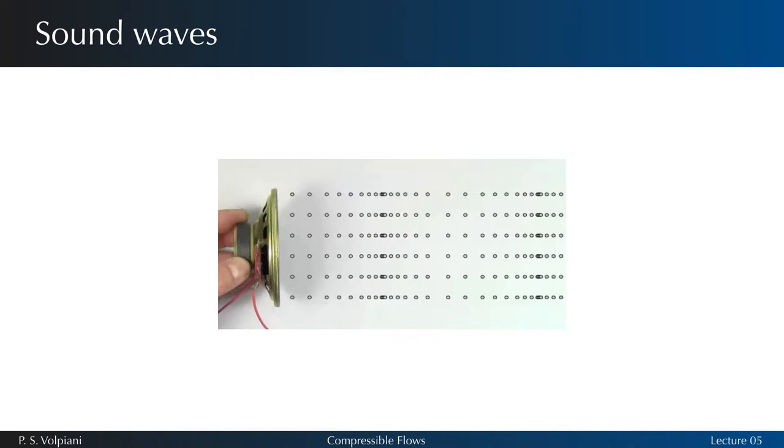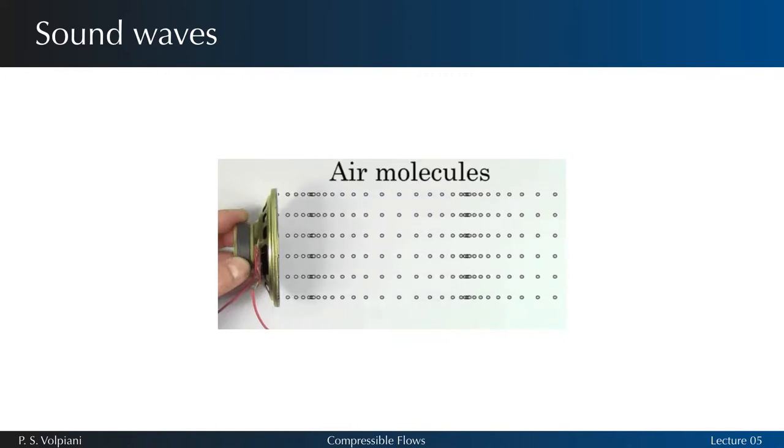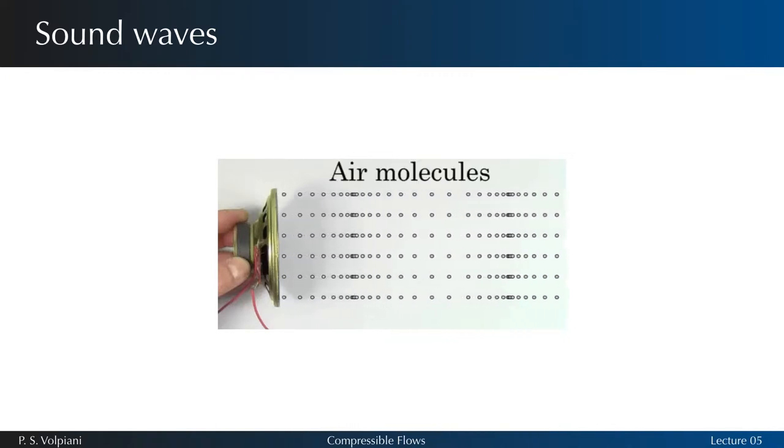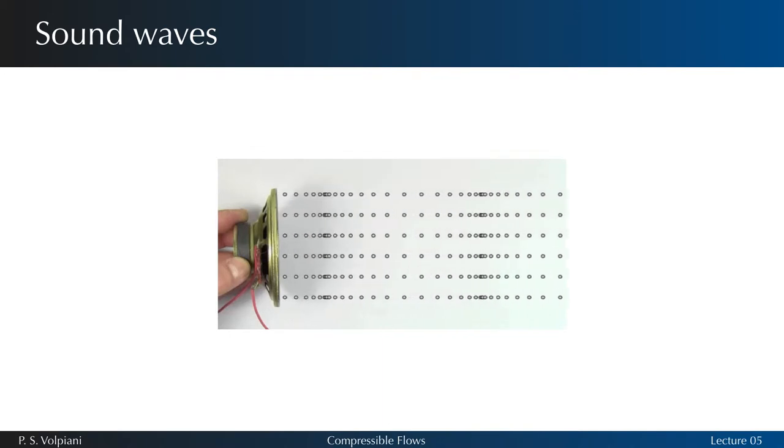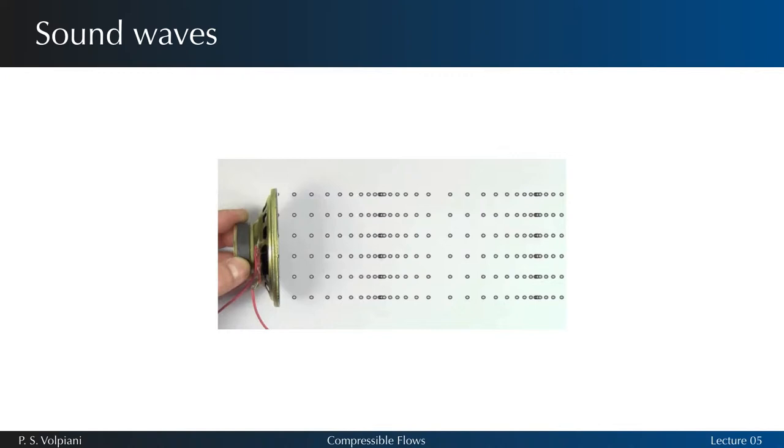We saw in the last class that infinitesimal pressure disturbances are called sound waves and they travel at a characteristic velocity that is determined by the medium in its thermodynamic state.